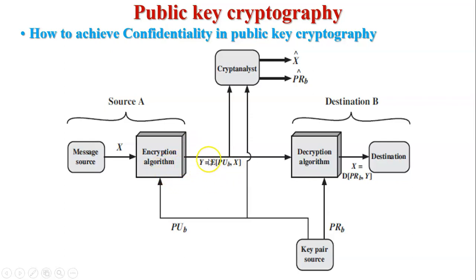The ciphertext Y is sent to the receiver side and can be decrypted by one and only one key — the private key of B. The decryption algorithm takes ciphertext Y and private key B as input and generates the original plaintext X, which is read by the destination. Any other user in the network connected between source and destination B will not be able to decrypt this message. As per the definition of confidentiality, the message should be known only to the sender and receiver — so confidentiality is achieved.